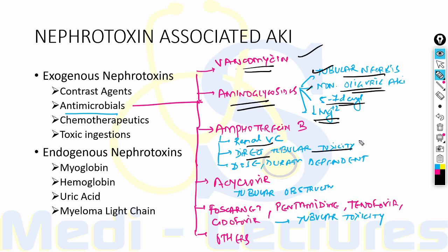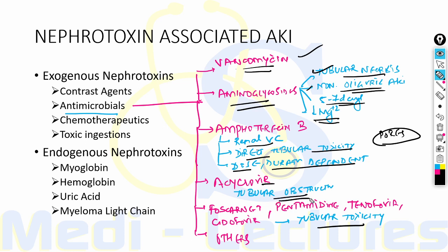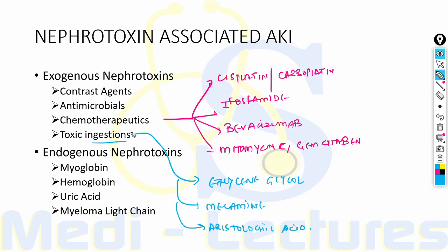Amphotericin B toxicity is dose and duration dependent; it binds to tubular membrane cholesterol leading to pore formation. Clinical features include polyuria, hypomagnesemia, hypocalcemia, and non-anion gap metabolic acidosis. Drugs like foscarnet, pentamidine, tenofovir, and pseudoephedrine lead to tubular toxicity, while acyclovir leads to tubular obstruction due to precipitation in the tubules. Drugs like penicillin, cephalosporins, quinolones, sulfonamides, and rifampicin lead to AKI by acute interstitial nephritis.